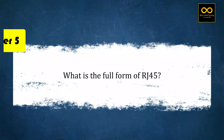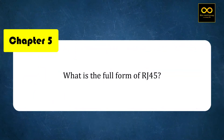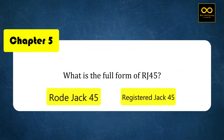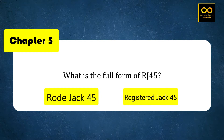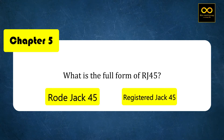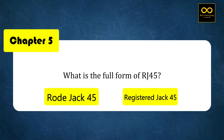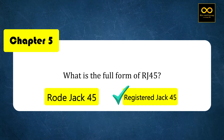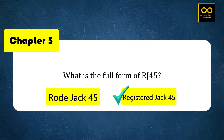What is the full form of RJ45? It contains 5 options. You can see it at the top. Option A: Road Jack 45. Option B: Registered Jack 45. The right answer is option B — Registered Jack 45.